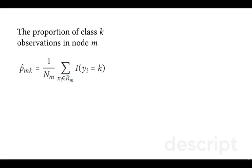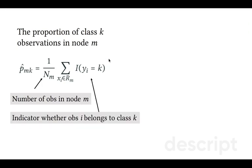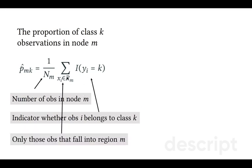So let's define the proportion of class k observations in node m as p hat mk, where nm would be the number of observations in node m. And we simply try to sum the number of observations that belong to class k, where i are all the observations that fall into region m.